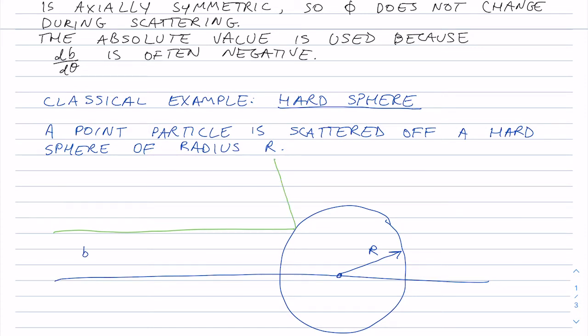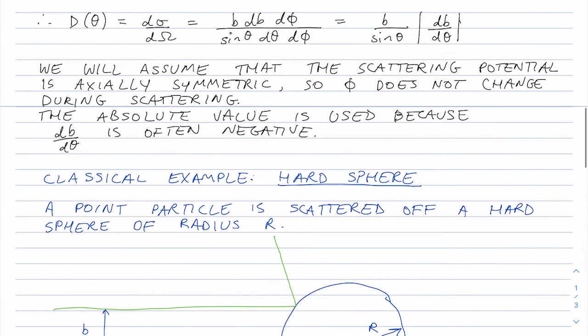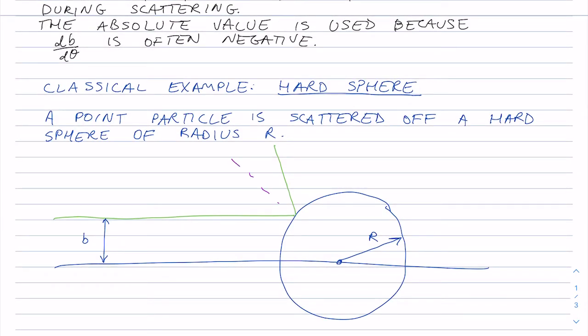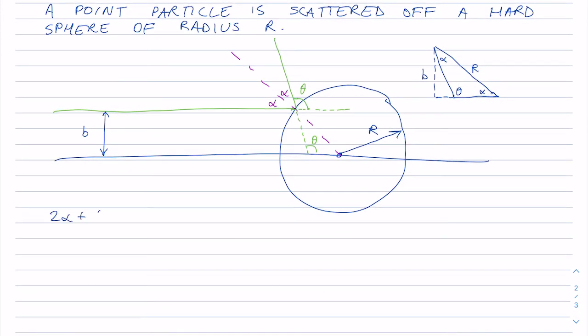and then scatter off in some direction. Our impact parameter is b, here. And we can just draw a little bit more to describe the sort of physics of the reflection. It's just classical physics here. So I'll just write some values of alpha, and this is the angle that it gets scattered by here, theta.